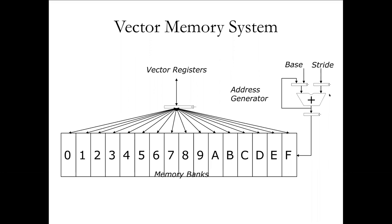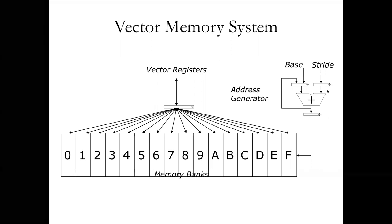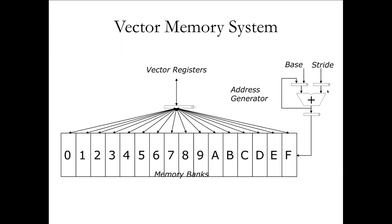We also need some logic around the stride, and this is where the stride register comes in. It tells us: you're going to fetch this address, and then we need to go some fixed amount of memory further and fetch that set of memory. The stride is just telling us to skip over, say, 16 bytes or whatever number is necessary.